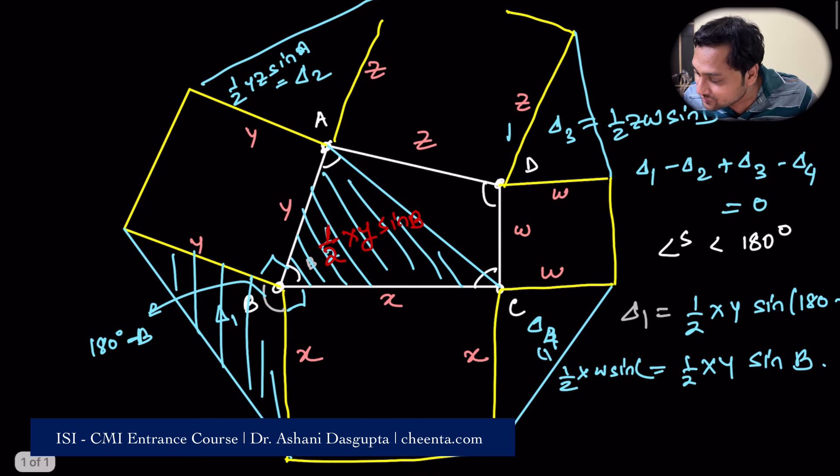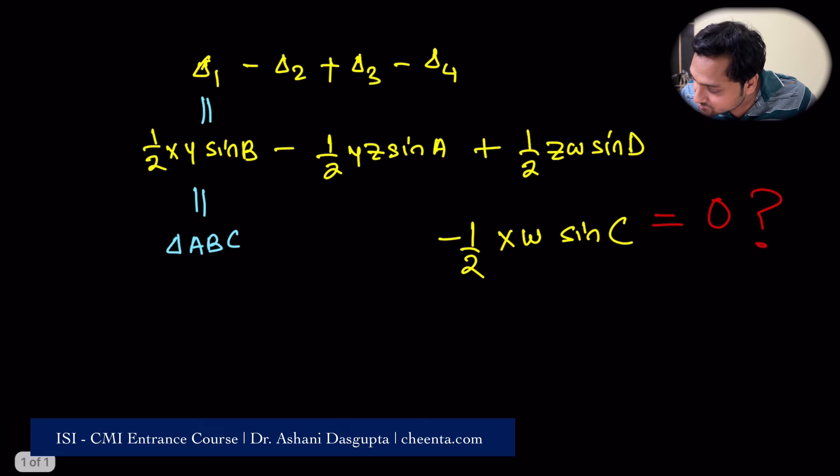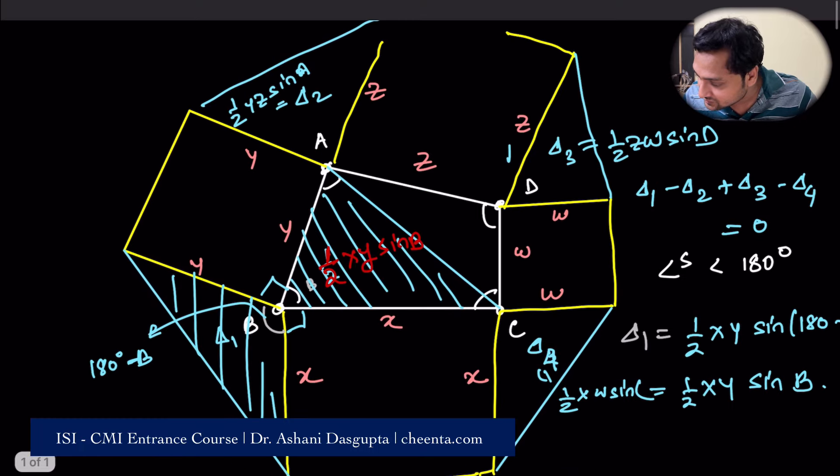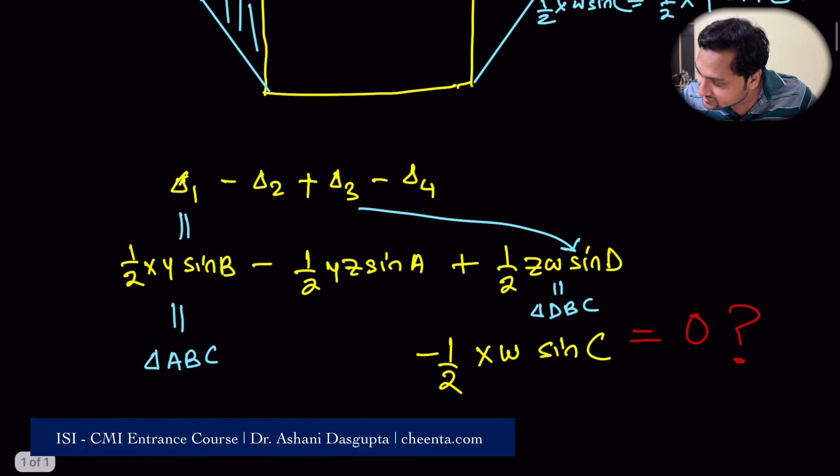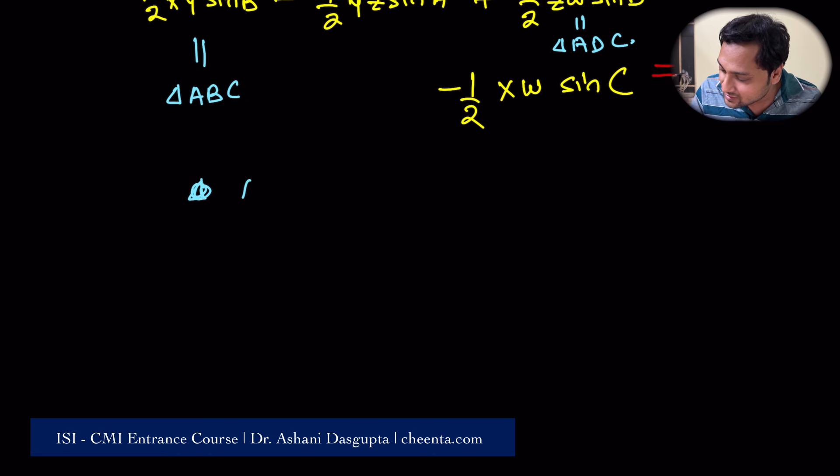Similarly, delta 3, which is half zw sin d, is same as ADC. So delta 3, which is this one, delta 3, is also equal to triangle DBC. I'm sorry, ADC, ADC, ADC. So if you add delta 1 and delta 2, delta 1 and delta 3, if you add these two, you'll get the entire quadrilateral ABCD. The entire quadrilateral ABCD is delta 1 plus delta 3.